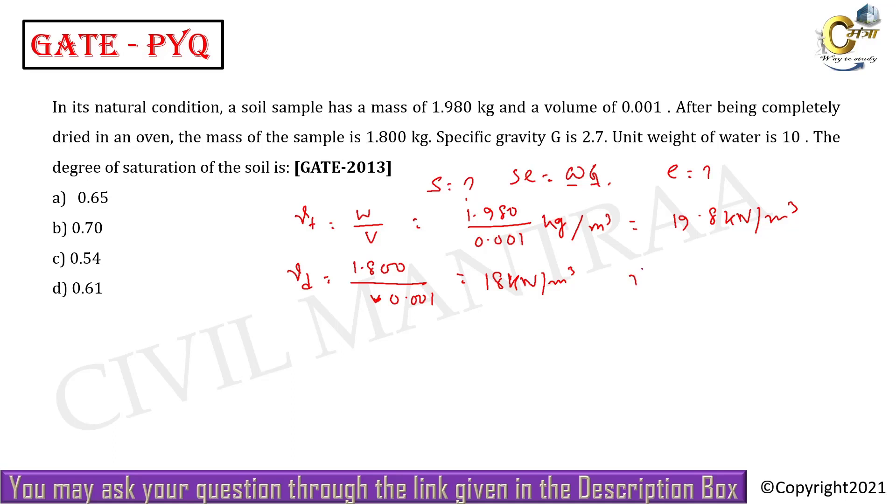Gamma d equals G into gamma w by 1 plus e. So from here, 1 plus e equals 2.7 into 10 by gamma d, that is 18. From this, the e value will be 0.5.